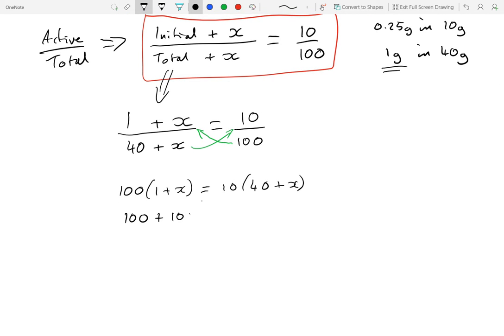Get all the x's on the same side: 100x minus 10x equals 400 minus 100. So 90x equals 300.